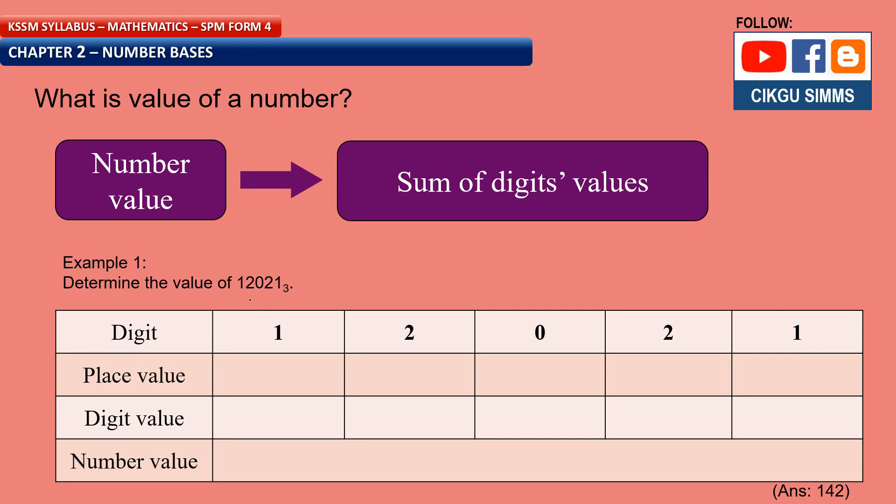Determine the value of 1, 2, 0, 2, 1, base 3. So like usual we find the place value and also the digit value first. So the place value depends on the base.